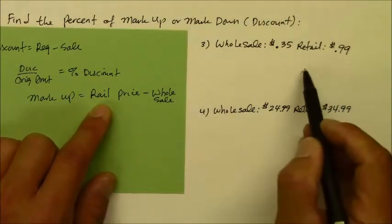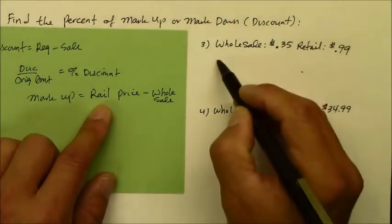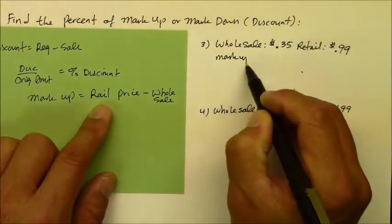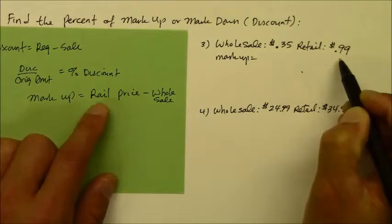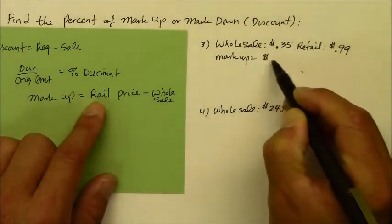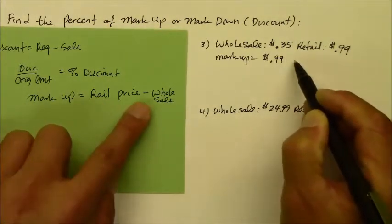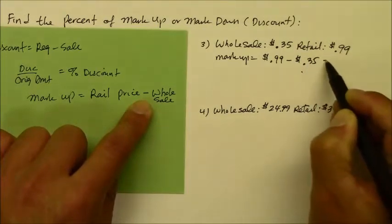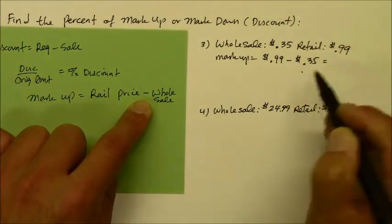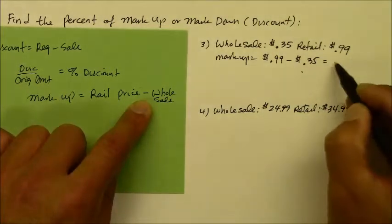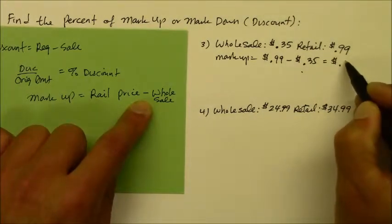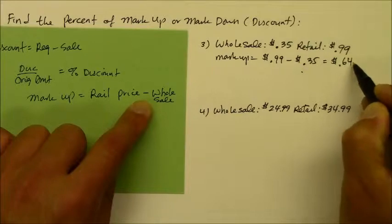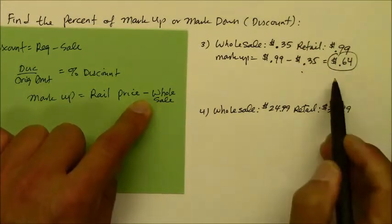So in this case, what you're charging the customer, the markup, is 99 cents. That's the retail. Minus what you're charging the customer, which is 35 cents. I don't need a calculator for that. 99 cents minus 35 cents turns out to be 64 cents.